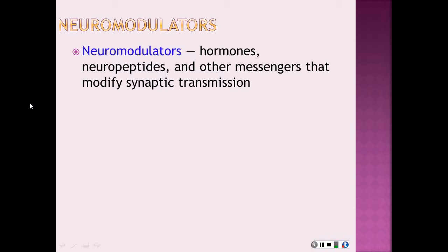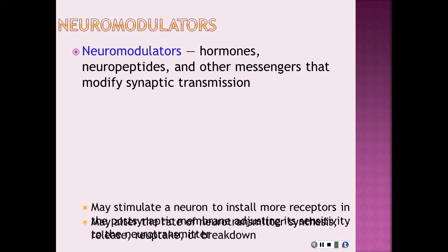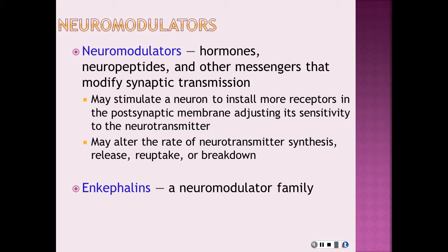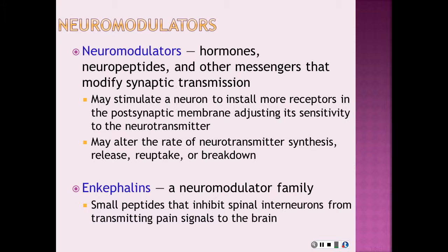Neuromodulators are hormones, neuropeptides, and other messengers that modify synaptic transmission. They may stimulate neurons to install more receptors in the postsynaptic membrane, adjusting its sensitivity to the neurotransmitter, and they alter the rate of neurotransmitter synthesis, release, reuptake, and breakdown. Enkephalins are also in the neuromodulator family — they are small peptides that inhibit spinal interneurons from transmitting pain signals to the brain.